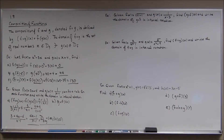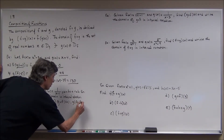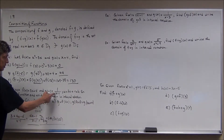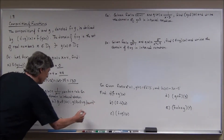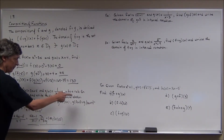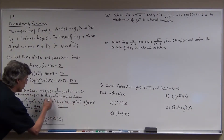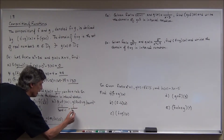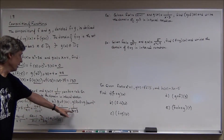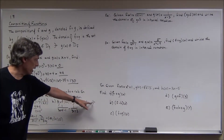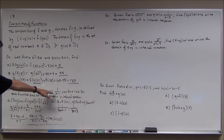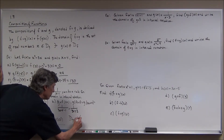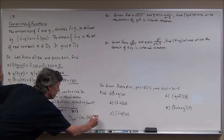Now let's do it the other way around: g circle f of x, which is g of f of x, which is g of 3x plus 4. Plugging 3x plus 4 into g, I can't have anything that makes the denominator 0, so I get 1 over 3x plus 4 minus 1, which is 1 over 3x plus 3. I can't have x equal to negative 1, because plugging in negative 1 makes the expression equal to 1 in the denominator argument, giving 0. So I can't have 1 or negative 1. The domain of g circle f is from negative infinity to negative 1, from negative 1 to 1, and from 1 to infinity.